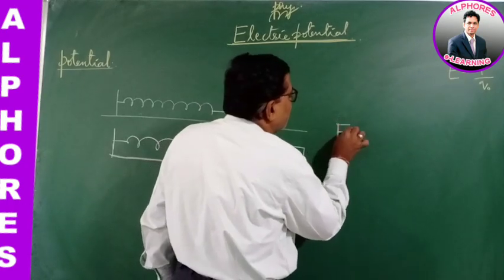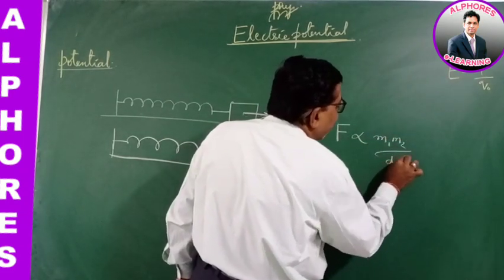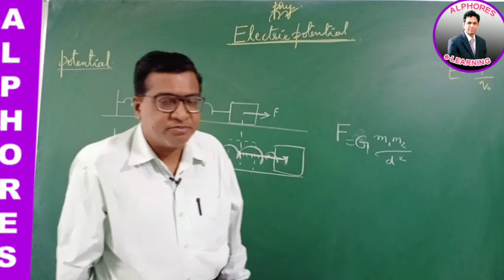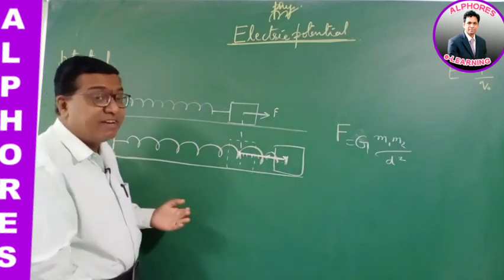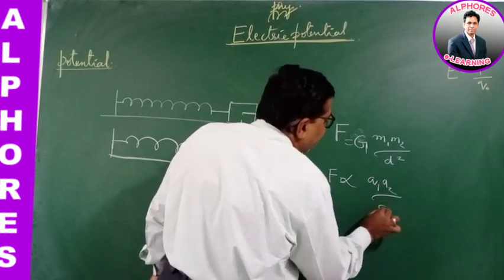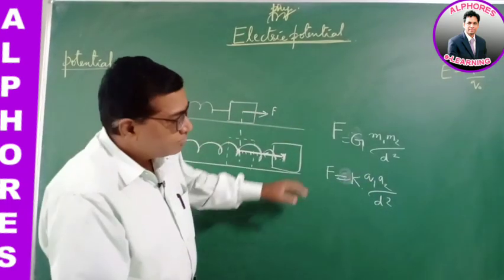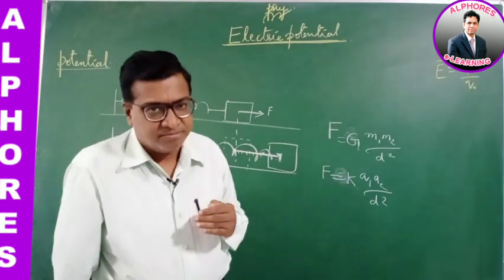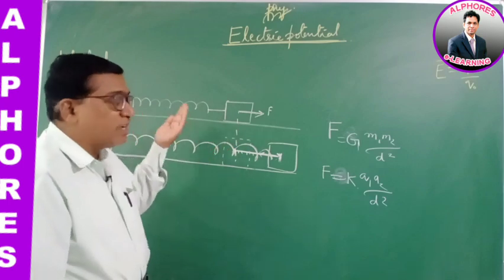Gravitational force between two particles, according to Newton's law of gravitation: F = G·M₁M₂/D². This force obeys the inverse square law. Our Coulomb's law for electrostatic force between two particles is F ∝ Q₁Q₂/D², also obeying the inverse square law with a different constant of proportionality. So Coulomb's electrostatic force is similar to gravitational force — both obeying the inverse square law.